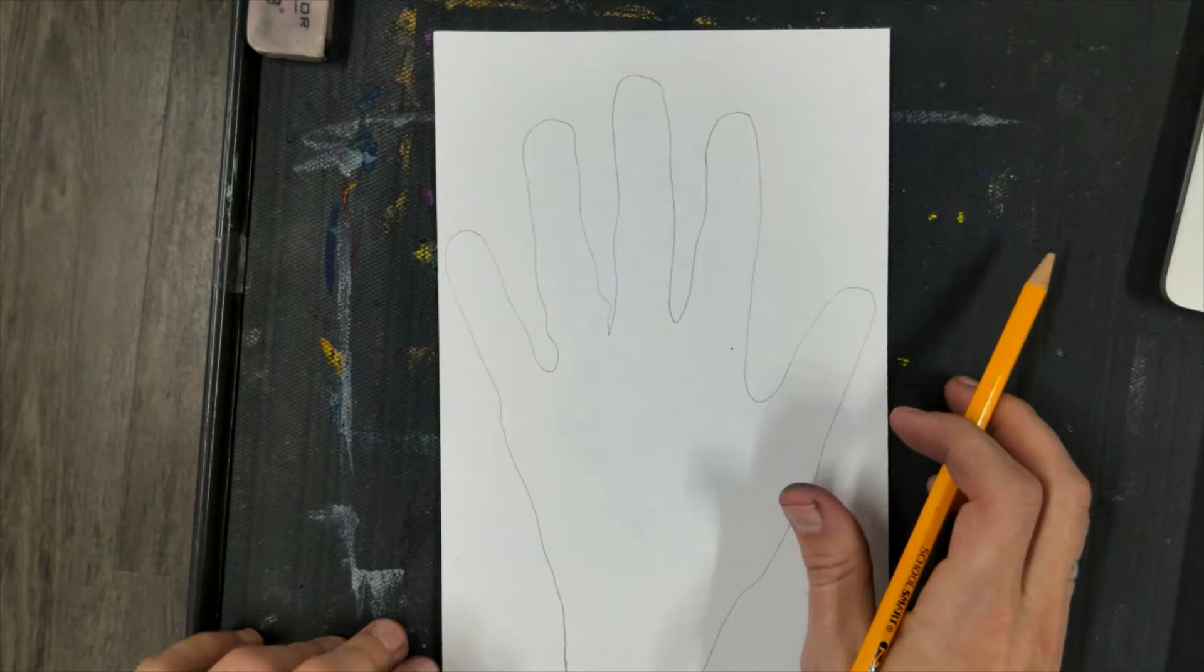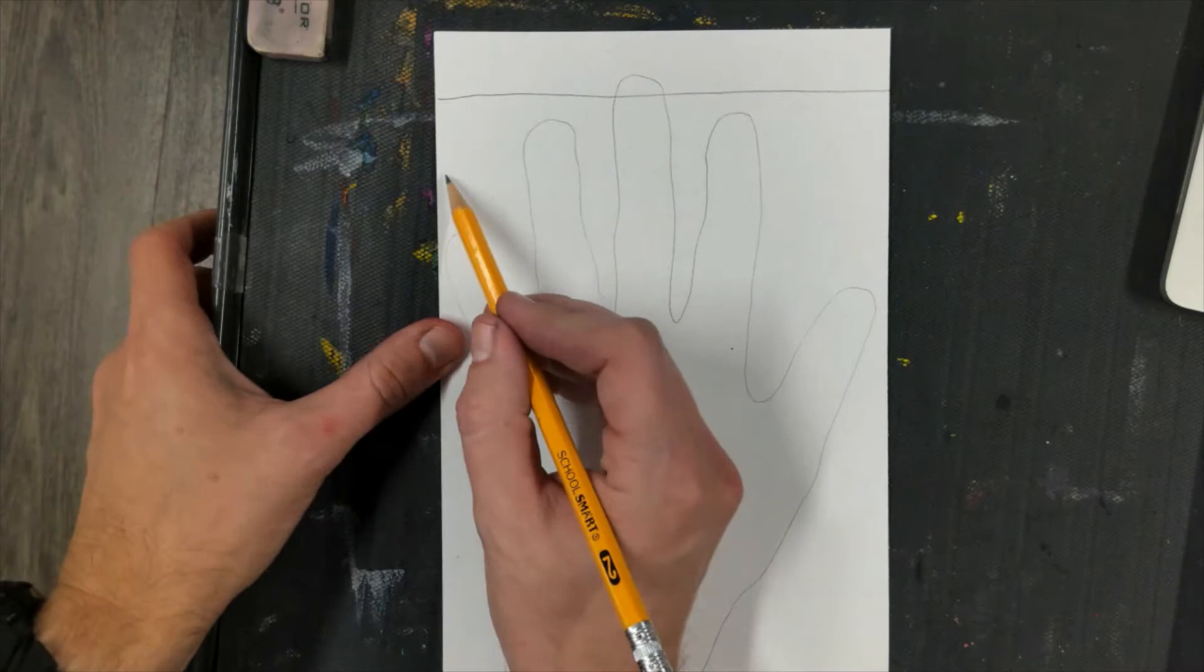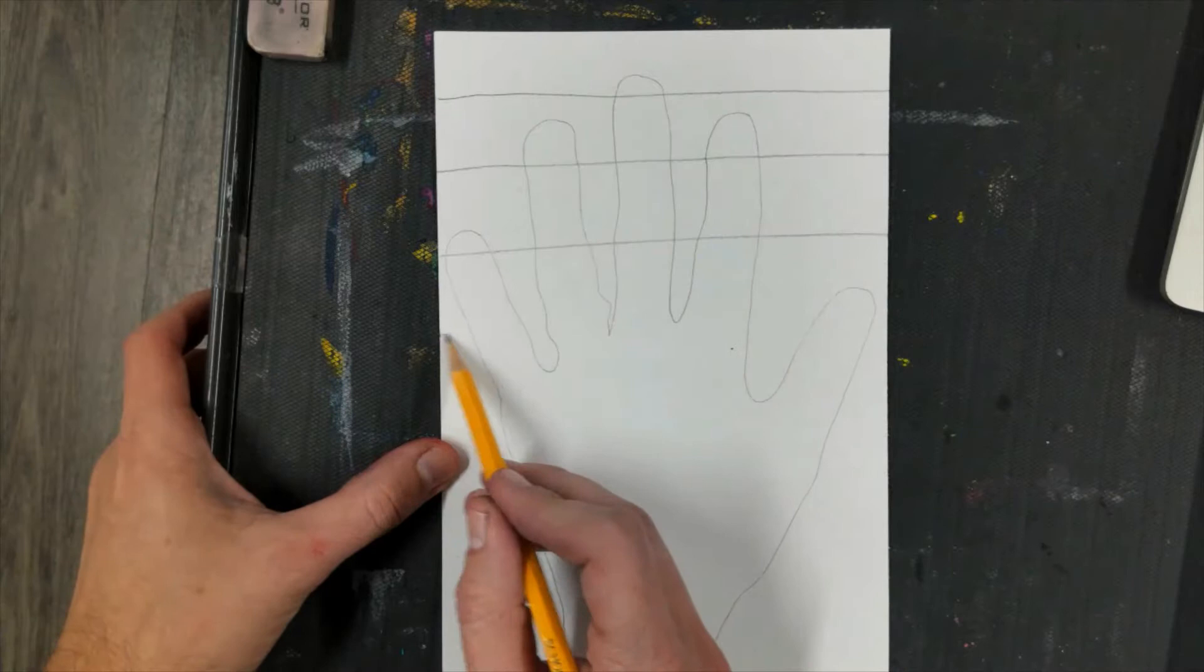So there's my hand print and then I'm going to divide my paper horizontally with lines. You can use a ruler if you want to or you don't have to. It doesn't have to be perfect. So I'm just going to draw some sideways lines. That's what horizontal means. I'm going to go through the hand print.